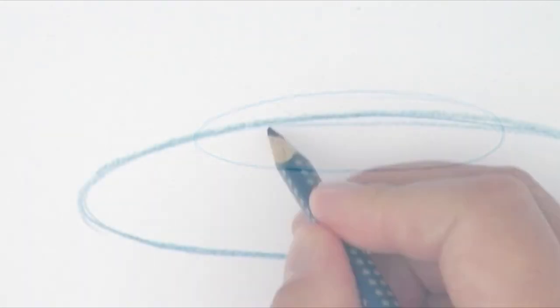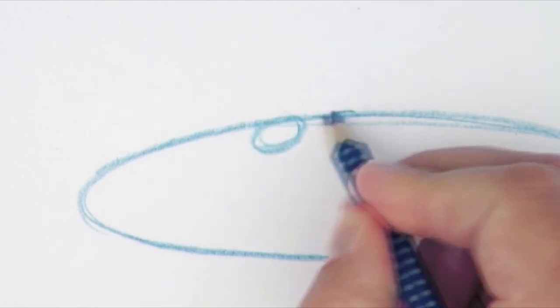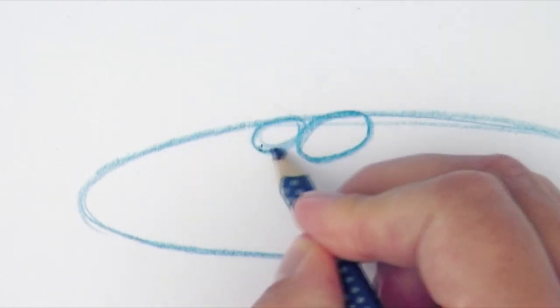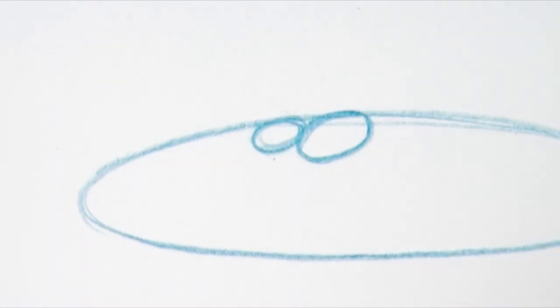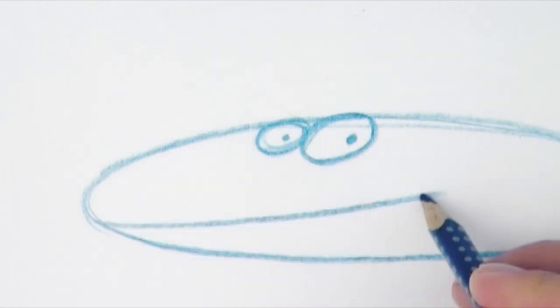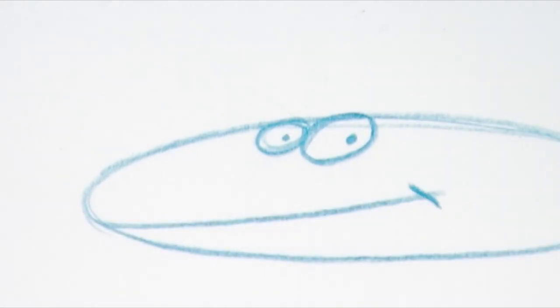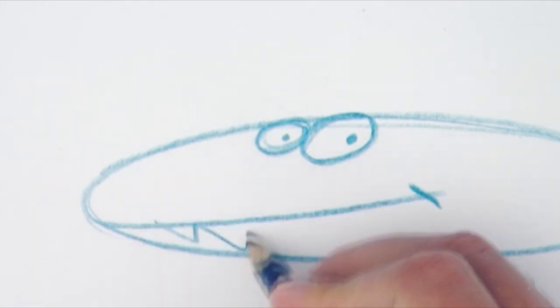Then I draw two small circles at the top of the cucumber shape that becomes the eyes. And now it's time for the big and dangerous crocodile mouth. And those big dangerous crocodile teeth.